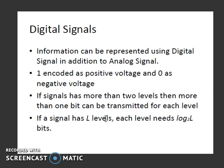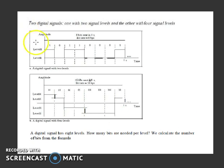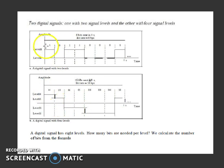If a signal has n levels, then each level needs log n to the base two bits to represent it. In the given example we have two signals — this one has two levels and this one has four levels. So with two levels we can represent one bit, whereas with four levels we have four signal levels.